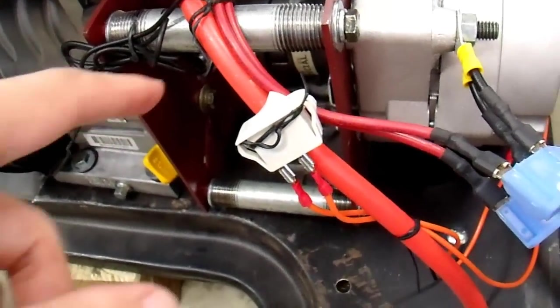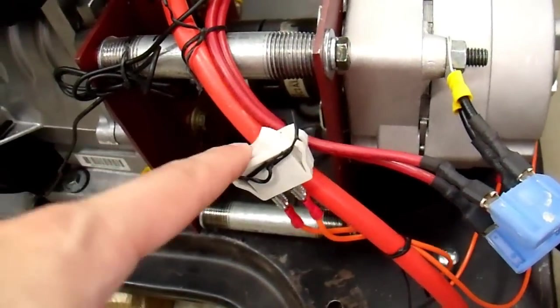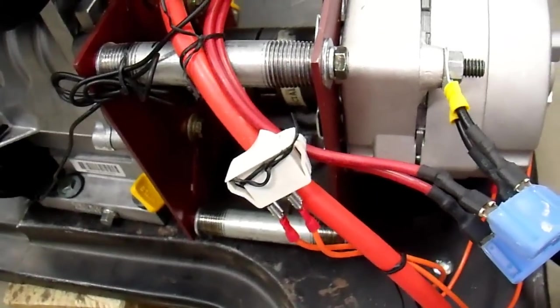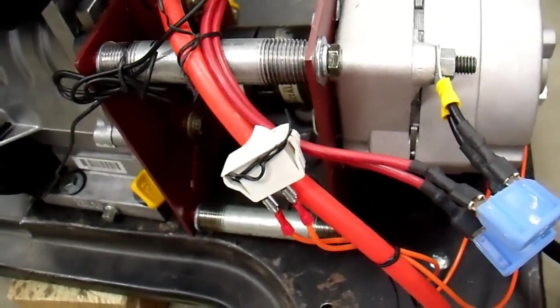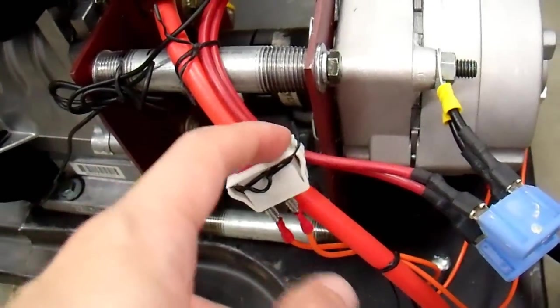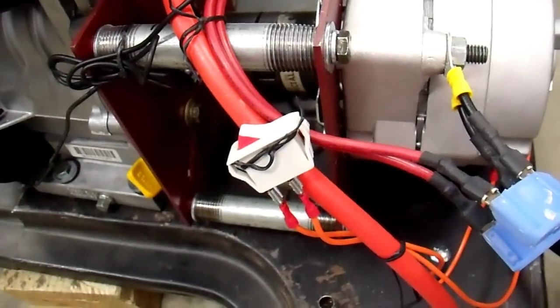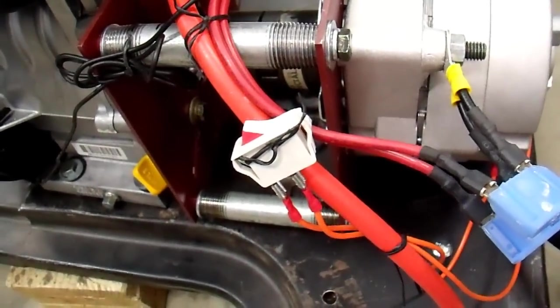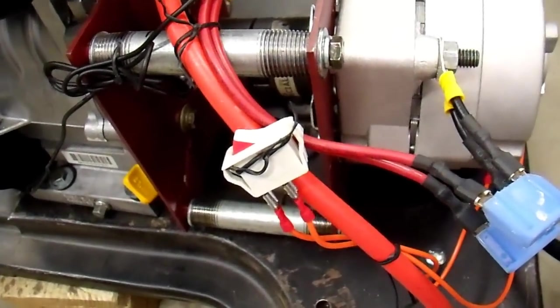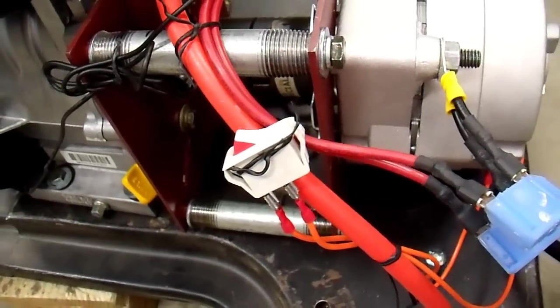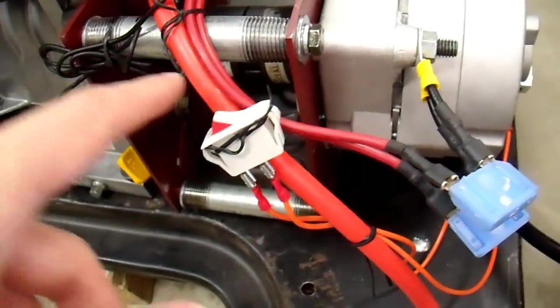I removed the momentary switch and swapped in this toggle switch instead, since the momentary switch didn't seem to work as I expected. I measured the battery draw with the switch on and it is less than 10 milliamps. That's the resolution that I had on my meter.